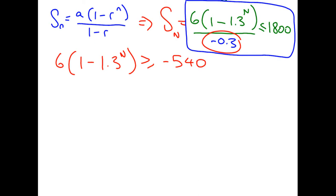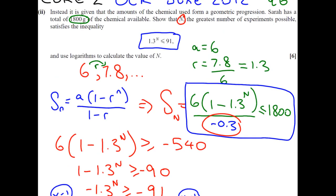Now we divide by 6, and that's fine because it's just a positive number, and we get minus 90. Now we can take away 1, and we get minus 1.3 to the n is greater than or equal to minus 91. Now we think that's not a very nice inequality, because we've got negatives on both sides. So you want to times both sides by minus 1, and that means that we're going to have to flip the inequality sign again to get 1.3 to the n is less than or equal to 91, which is what we were aiming for.